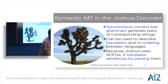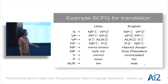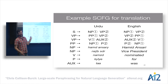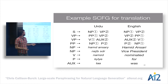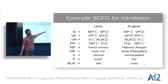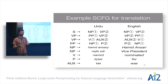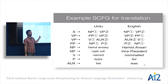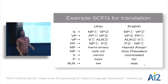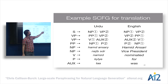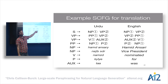Here's an example synchronous context-free grammar for the Urdu-to-English language pair. If you just ignored the English column, you'd get a normal context-free grammar. To make it synchronous, every rule must have an identical set of non-terminal symbols — noun phrases or verb phrases — on both the input and output side, but those non-terminal symbols can come in different orders. Urdu is a post-positional language, so where English has 'to the store,' Urdu has 'the store to.' It's also a verb-final language.